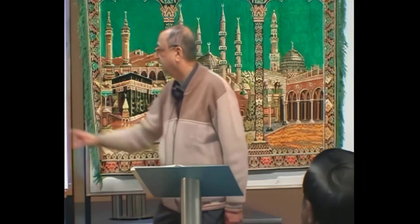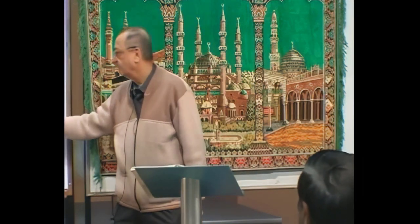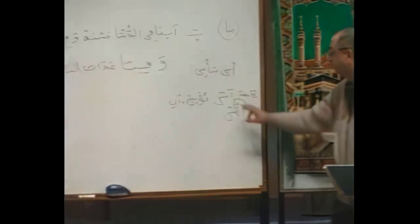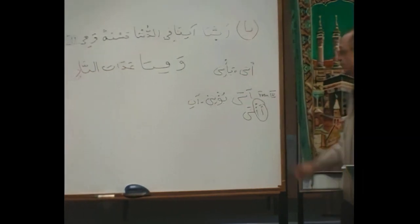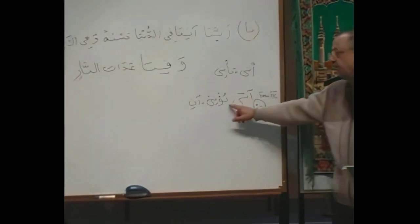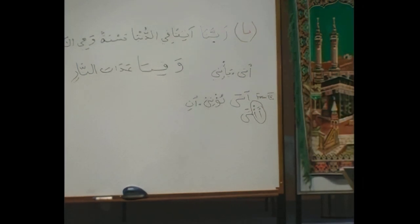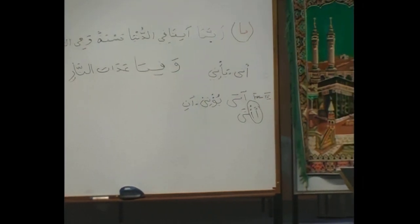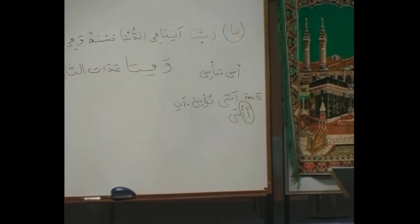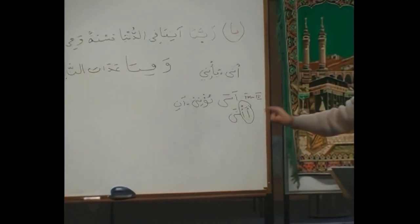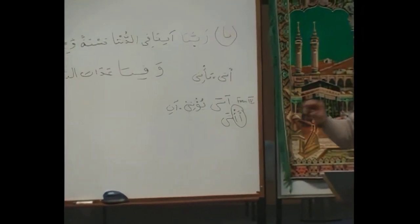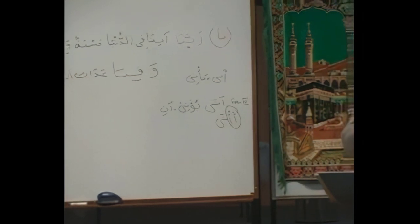Aati. And it becomes Uati - Form 4. It has 4 letters: 2 in A and 2 here. So the Hamzah becomes U. This we are going to learn in the next few days, inshallah. Before we go to Book 3, we are going to learn everything about the verbs in a brief way, inshallah.